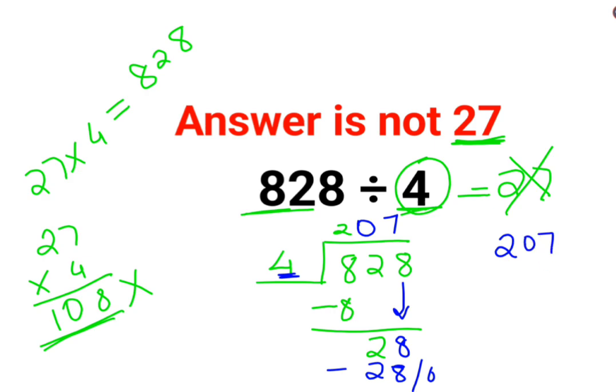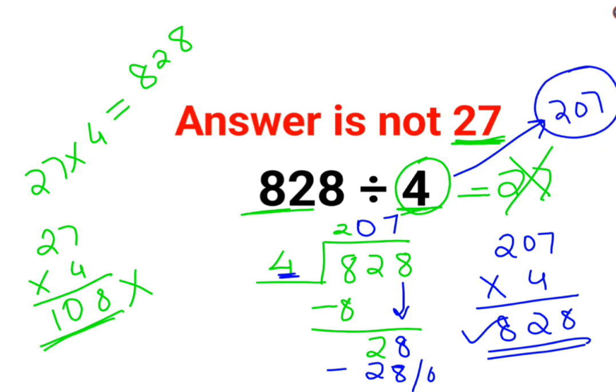207 if multiplied by 4, are we getting it as 828? This is 8, 2 and 8. This is absolutely correct. So I can say the answer for this question is supposed to be 207 and not 27.